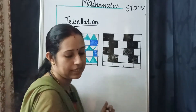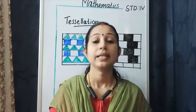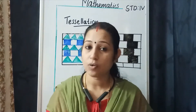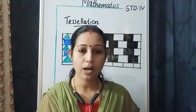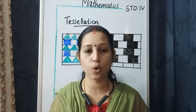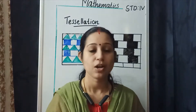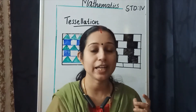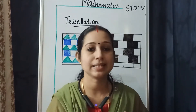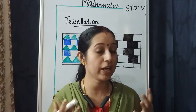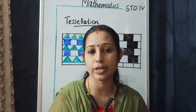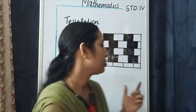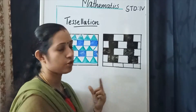Where can we see tessellation? We can see it in courtyards, pavements, on the floor, on footpaths, etc. We can see different designs and different types of tessellation. Here are two examples of tessellation.